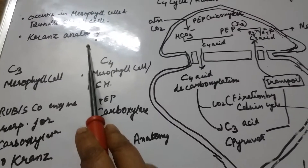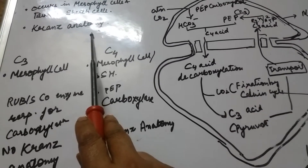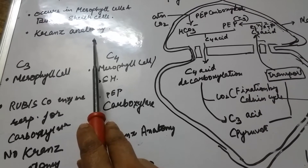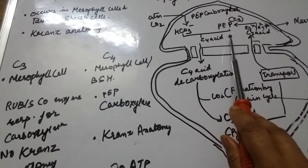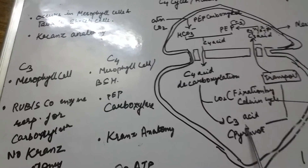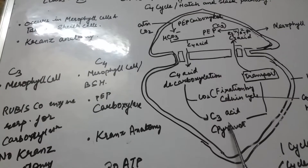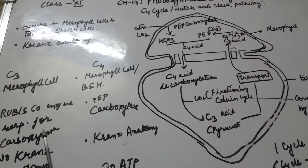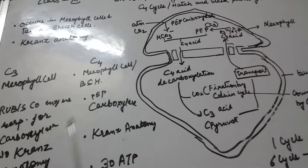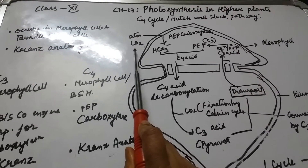Another important feature seen in the C4 pathway is Kranz anatomy. Kranz anatomy is a different type of leaf appearance due to the presence of mesophyll cells and bundle sheath cells — a special structural feature of C4 plants.